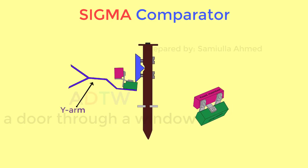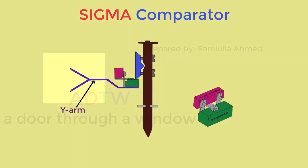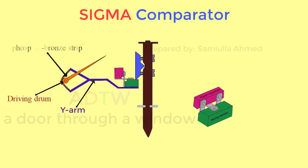This deflects an arm which divides into a Y form. The extreme ends of the Y arm are connected to a driving drum by means of a phosphor bronze strip.